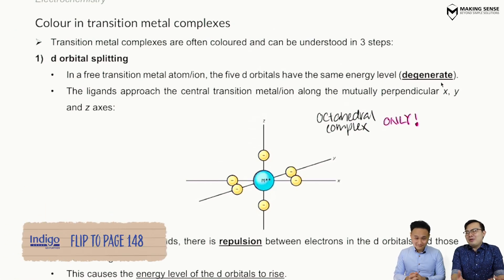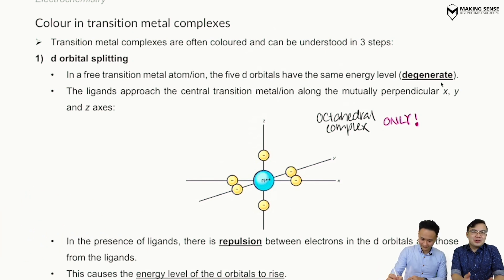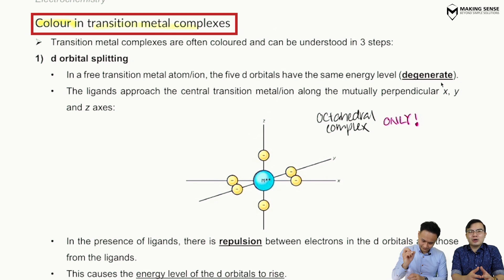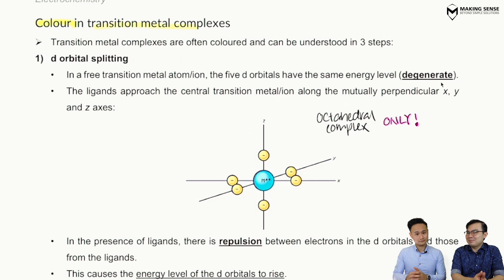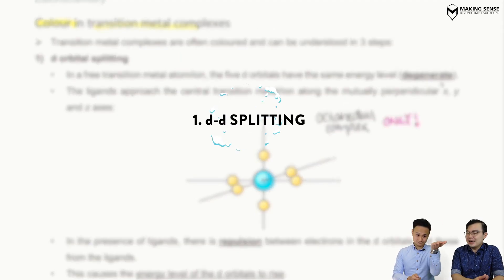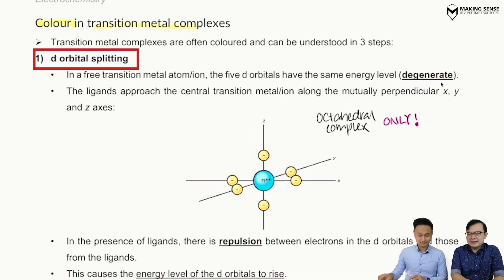Knowing how colors form is just one part of the equation. We're going to use this idea to explain why transition metal ions and their compounds are often colored. I'm going to break my discussion into two major parts: the first is called d-d splitting, and the other is called d-d transitioning. Let's take a look at d-d splitting first.